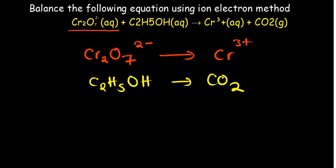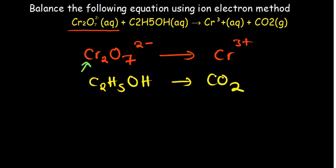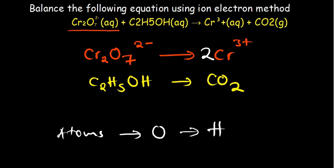When balancing using the ion-electron method, the order is: first balance atoms other than oxygen and hydrogen, then balance oxygen, then balance hydrogen, and then balance the charge. Starting with the first half reaction — chromium: we have two on the left and one on the right, so we add a coefficient of 2 on the right.